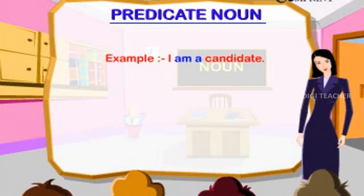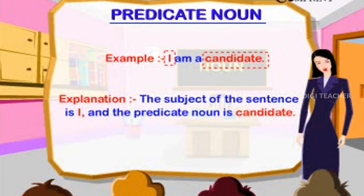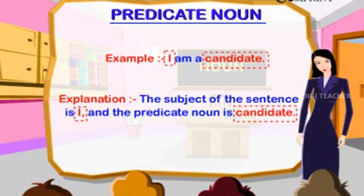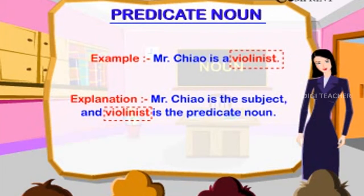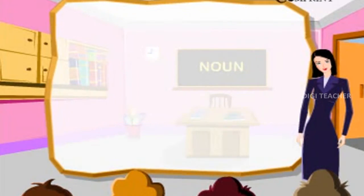Predicate Noun. Example: I am a candidate. The subject of the sentence is 'I' and the predicate noun is 'candidate'. Example: Mr. Cayo is a violinist. Mr. Cayo is the subject and 'violinist' is the predicate noun.